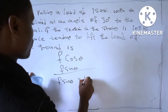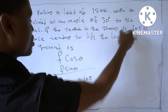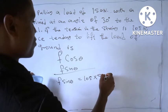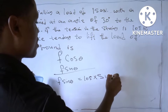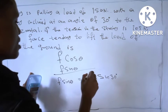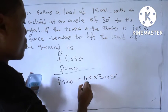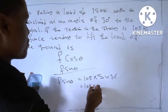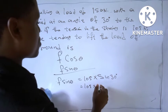So equal to 105, which is the force, times sine theta, which is sine 30 degrees. Sine 30 is 0.5, or 1 over 2.